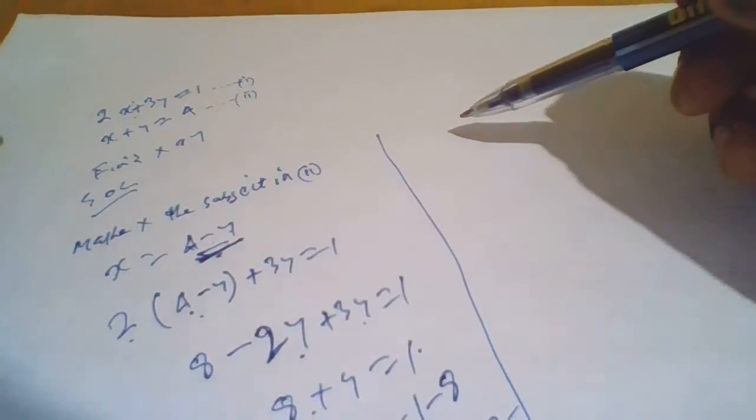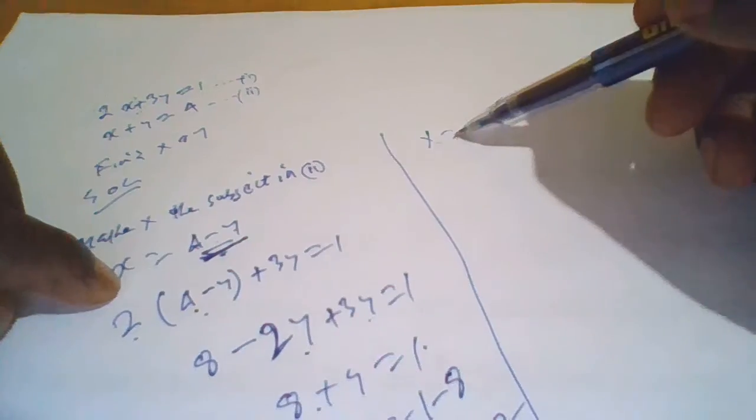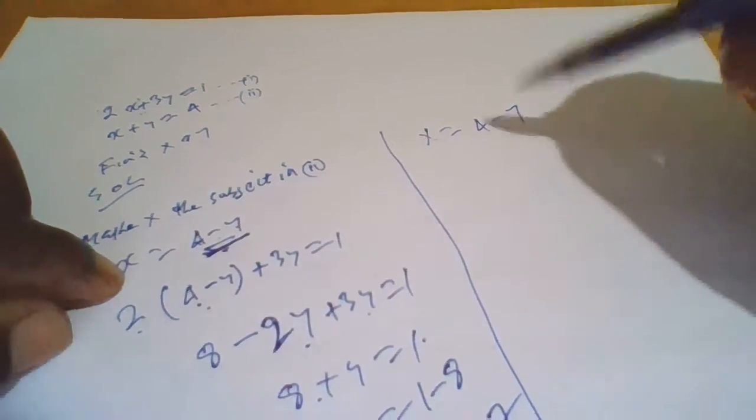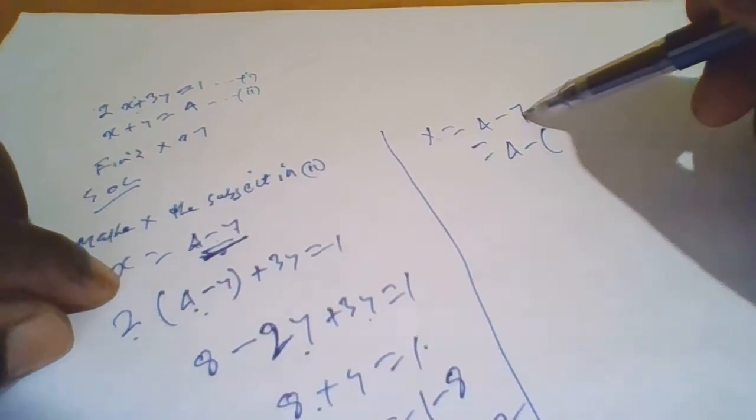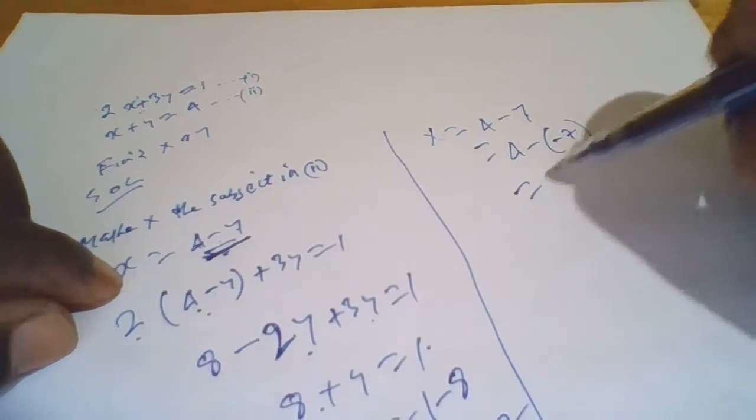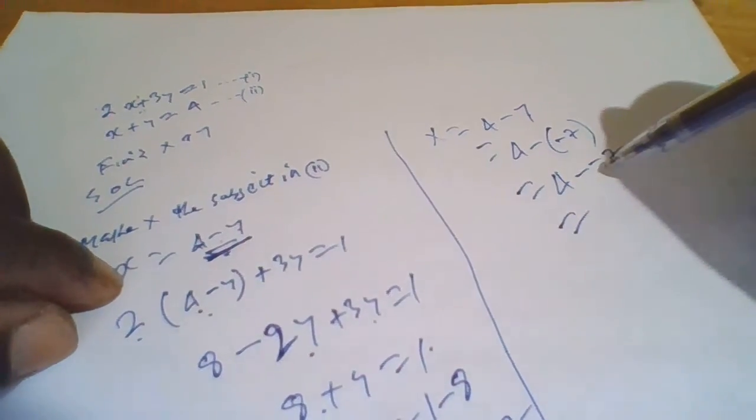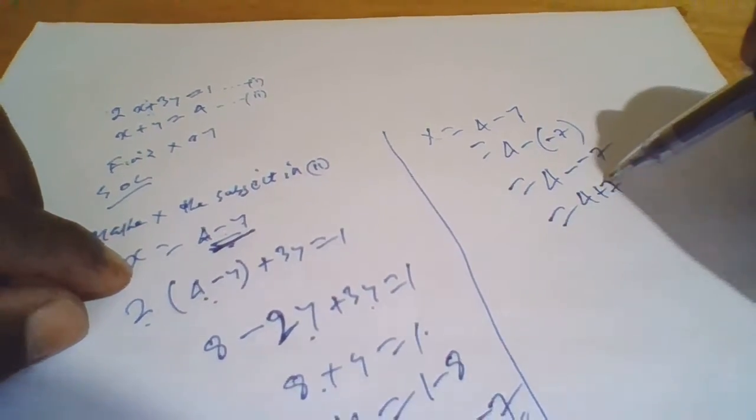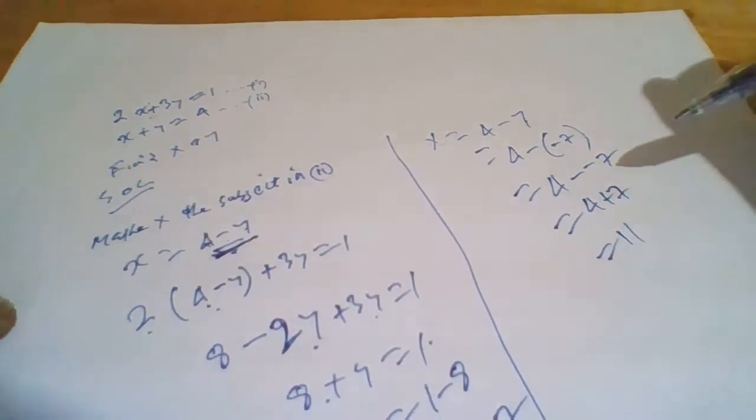So if y equals minus 7, we have been told that from this equation x equals 4 minus y. Therefore x will be equal to 4 minus the value of y, which is minus 7. So this equals 4 minus minus 7, which equals positive. So the value of x is 11.